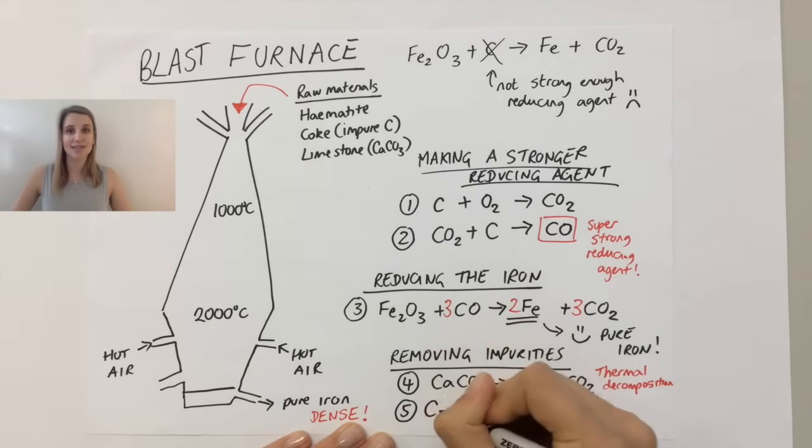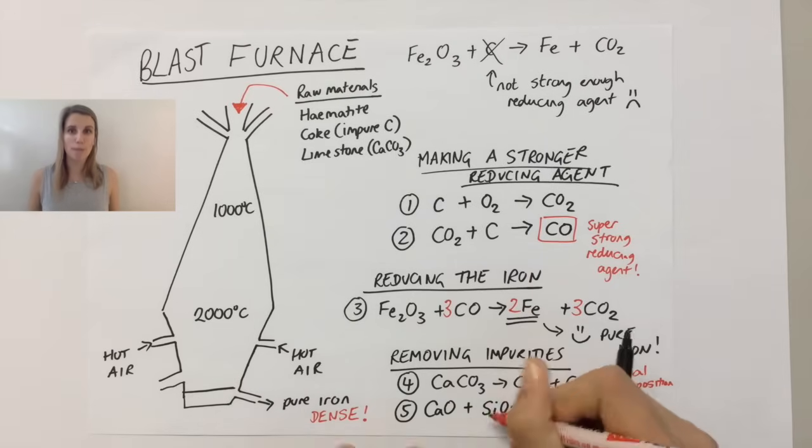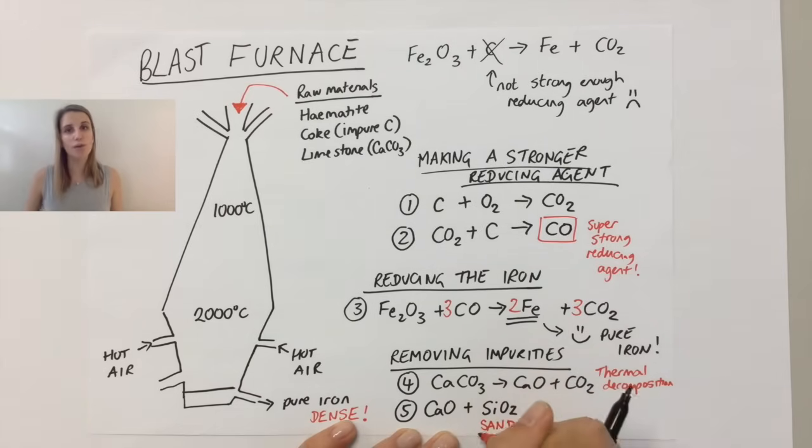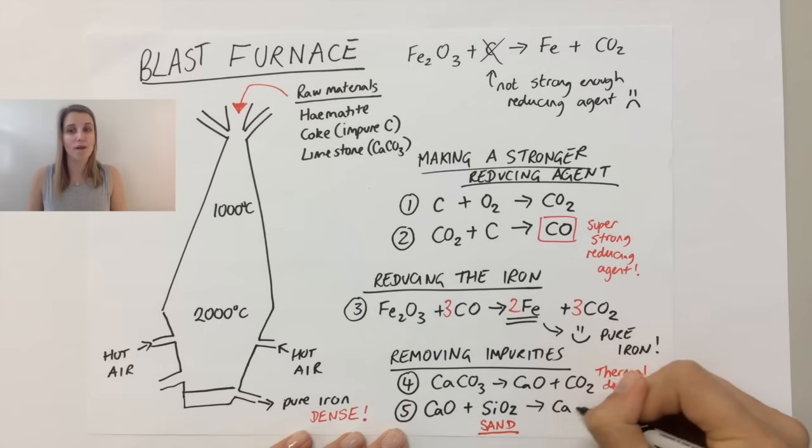That calcium oxide can then react with the silicon dioxide, which is sand, to make this calcium silicate, CaSiO3. Now it's kind of easy to remember what that product is because as long as you've got the first parts, it only makes one product. So you just need to put all of the atoms together and make sure everything is balanced.